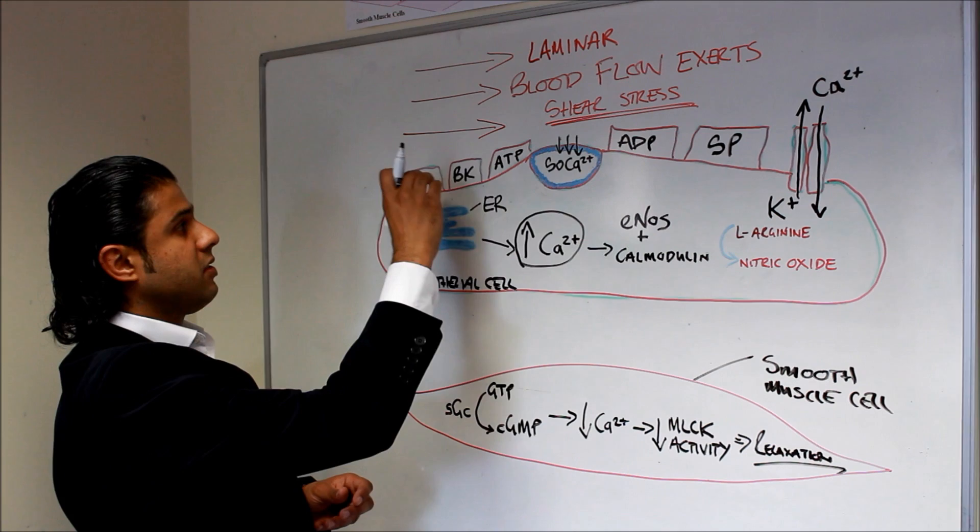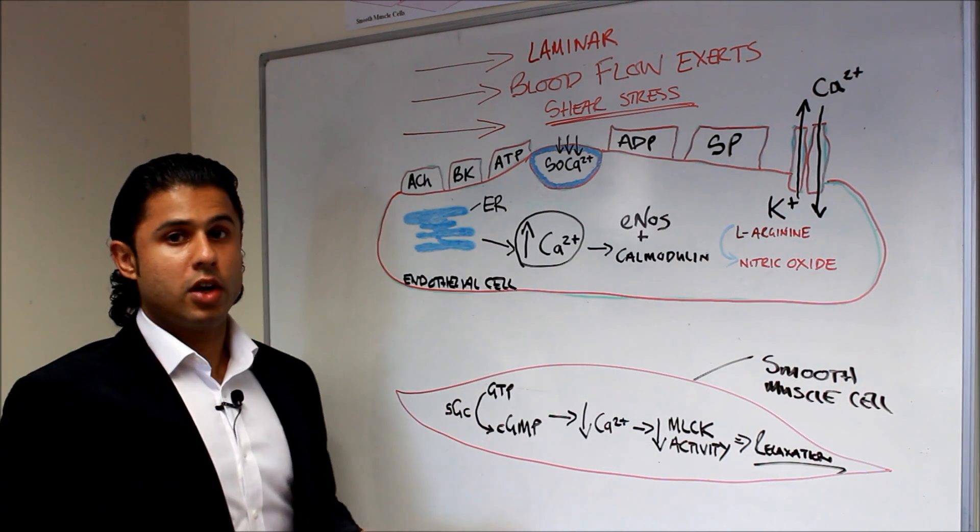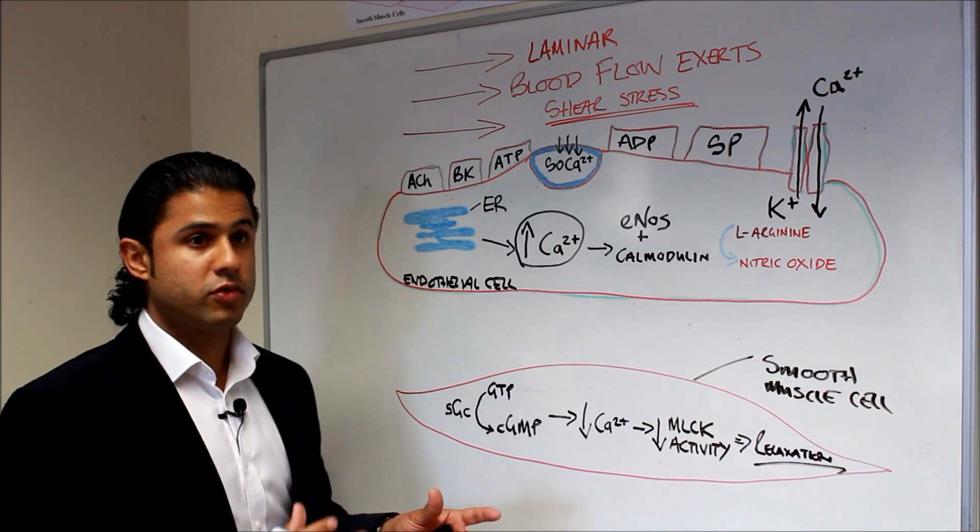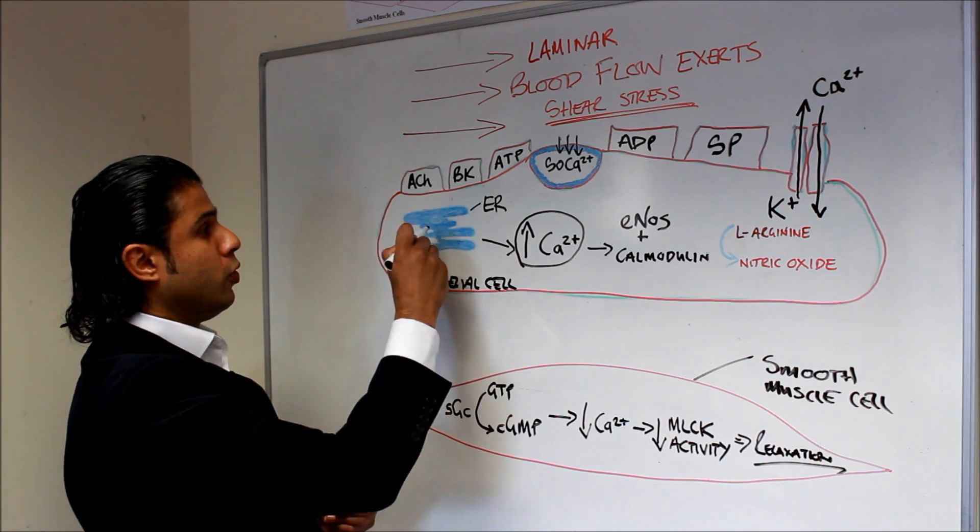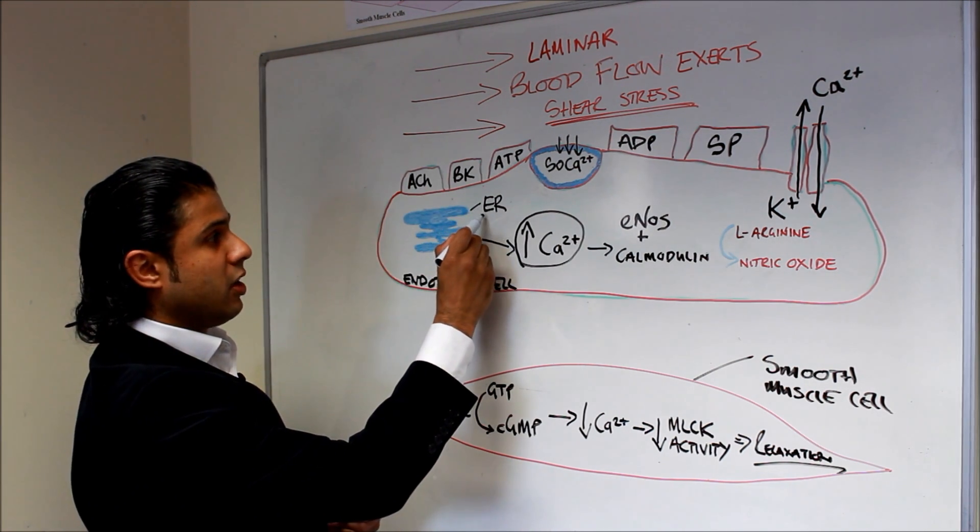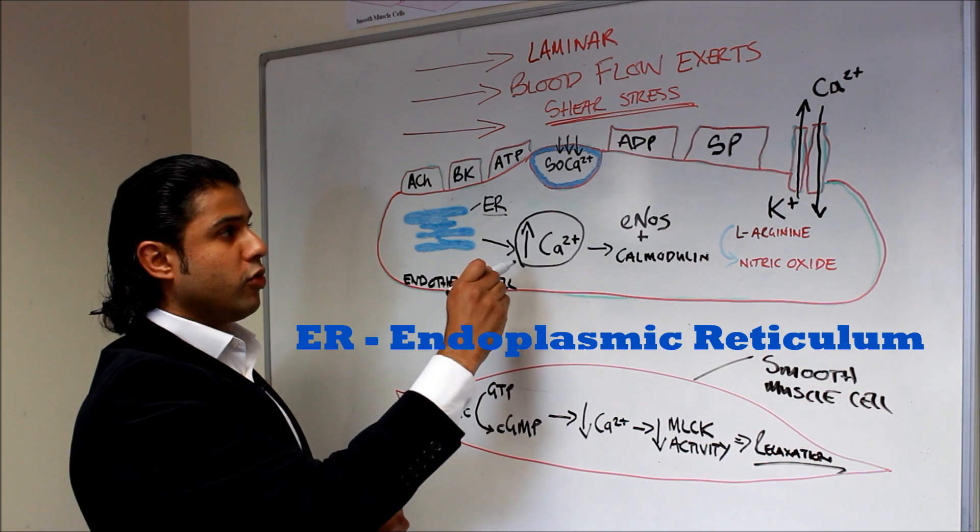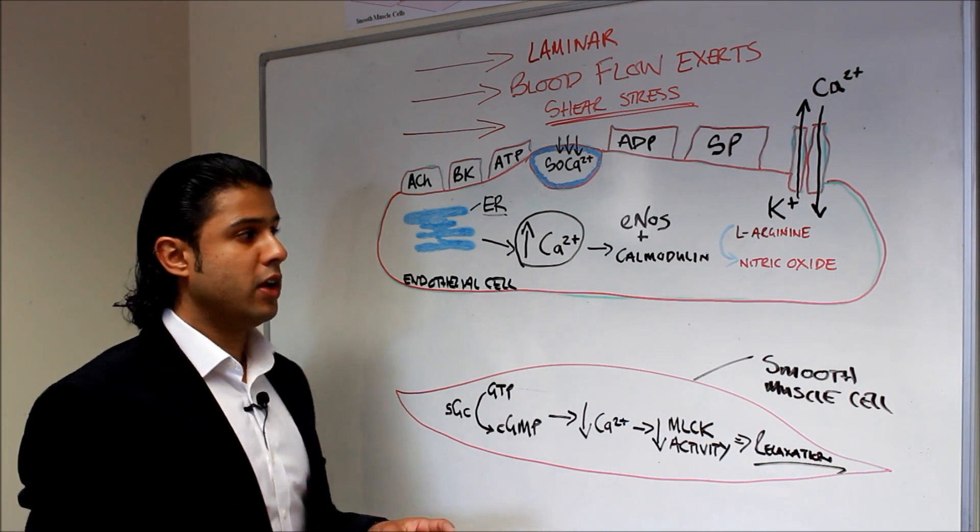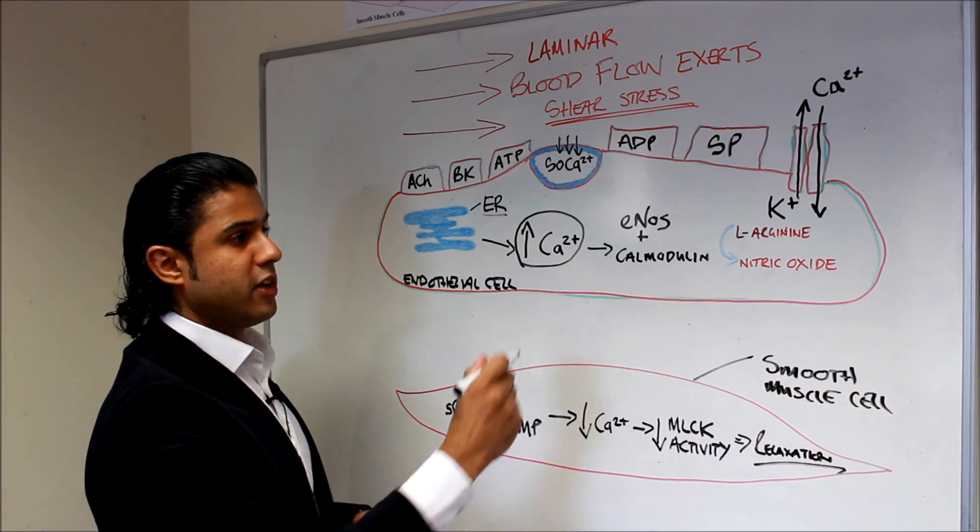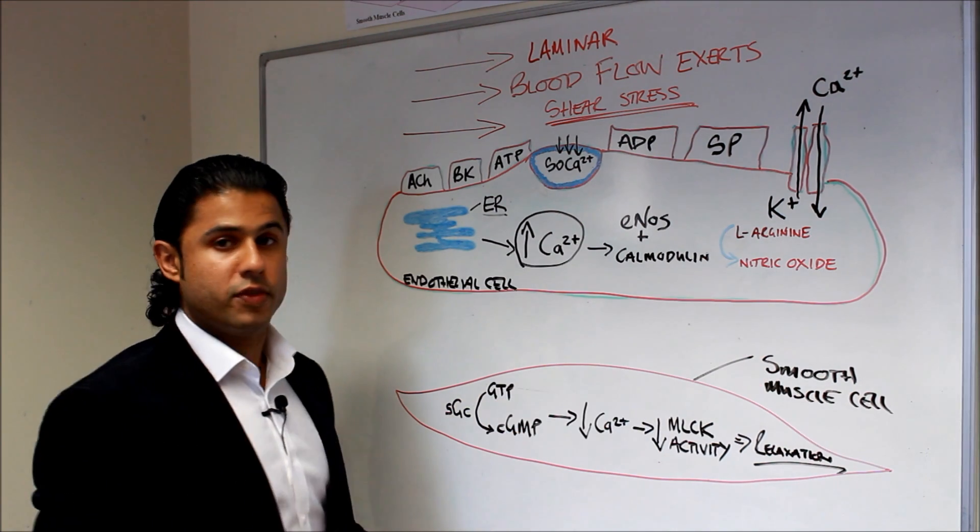And when acetylcholine binds to the particular receptor, so it would be a muscarinic receptor, that would cause the endoplasmic reticulum which we've got here to increase the amount of calcium. And then we would start to get the chain of events which lead to the production of nitric oxide.